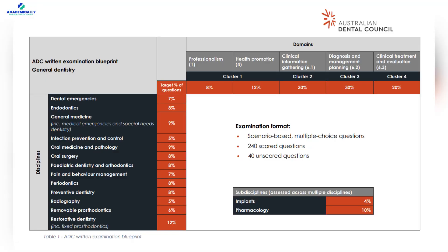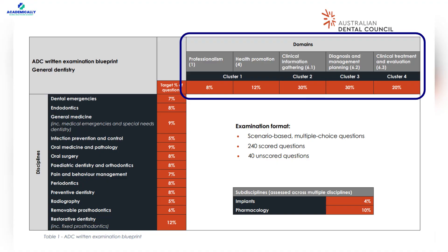Looking at the syllabus of the ADC exam: dental emergencies covers 7%, endodontics about 8%, general medicine, medical emergencies and special needs dentistry around 9%, infection prevention and control about 5%, oral medicine and pathology about 9%, oral surgery about 8%, pediatric dentistry and orthodontics 8%, pain and behavior management 7%, periodontics 8%, preventive dentistry 8%, radiography 5%, implants 4%, removable prosthodontics 6%, pharmacology 10%, and restorative dentistry including fixed prosthodontics 12%. These areas will be assessed based on professionalism, health promotion, clinical information gathering, diagnosis and management planning, and clinical treatment and evaluation.